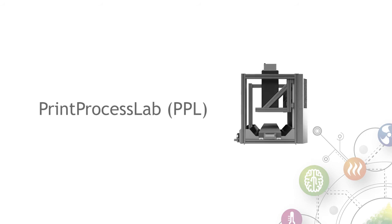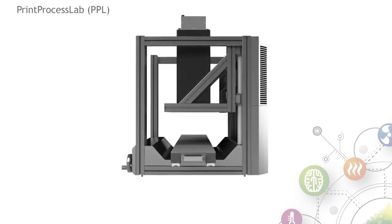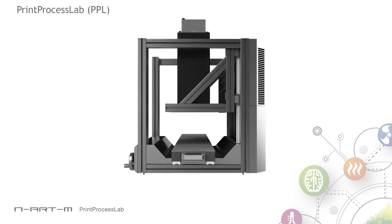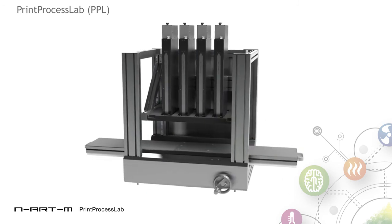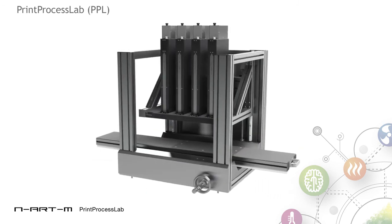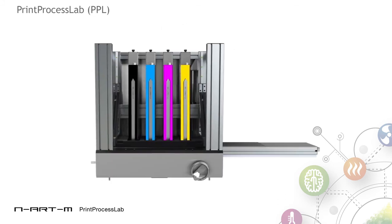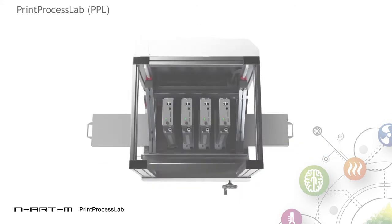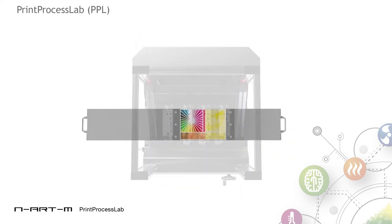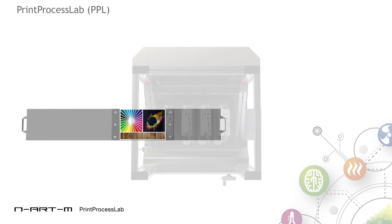ColorGate offers, as exclusive solution partner of Enert M GmbH, the new Print Process Lab. Print Process Lab is a modular testing and simulation system to simplify and accelerate the process development in digital industrial inkjet printing. It is used for detailed examination of printhead and ink compatibility and enables the realistic simulation of the printing process in industrial printing applications, offering numerous analysis options.